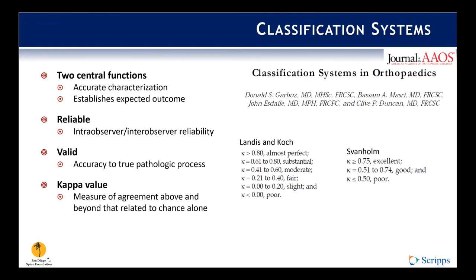A valid classification system correctly categorizes the attributes of interest and accurately describes the actual process occurring. To measure and quantify validity, the classification of interest must be compared to a gold standard. In 1960, Cohen introduced a kappa value as a measure to assess agreement above and beyond chance alone. Today, the kappa value is the most accepted method of measuring observer agreement for categorical data. Kappa values range from negative one (complete disagreement) to zero (chance agreement) to one (complete agreement), with two benchmarks used to assess it — though both are completely arbitrary despite their widespread use.